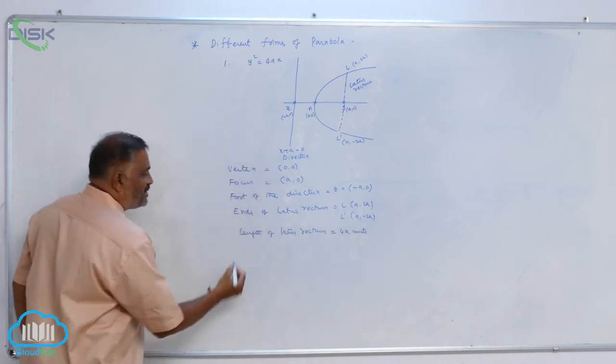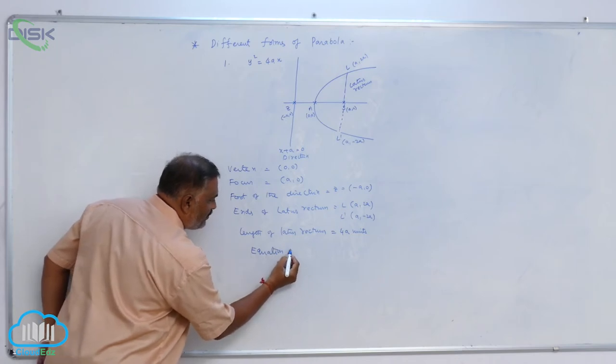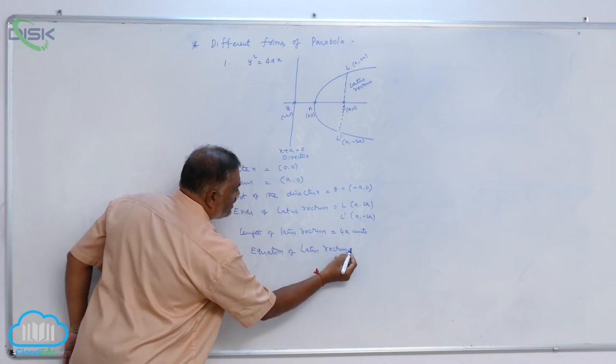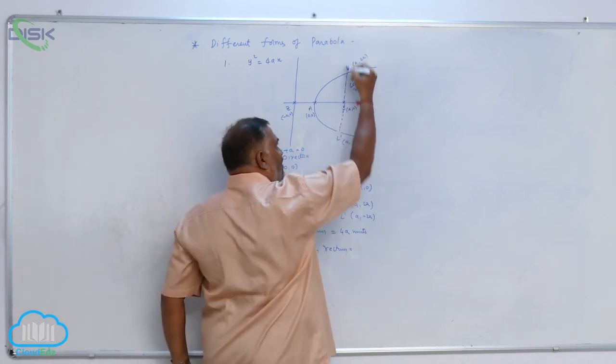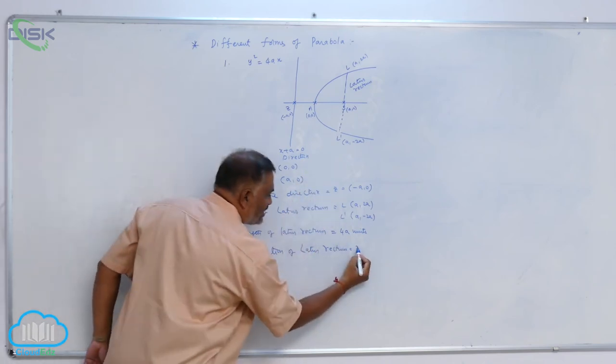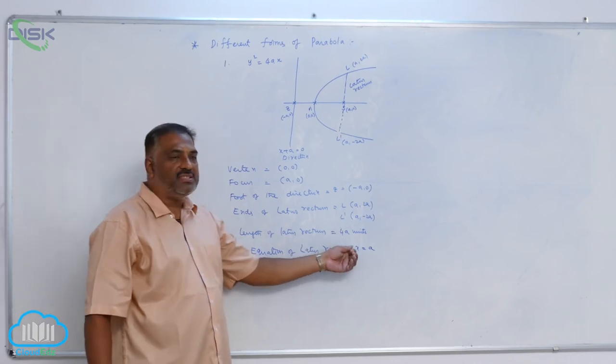Then comes equation of Latus Rectum. Equation of Latus Rectum is equal to—since it is a vertical line parallel to y-axis—it is x is equal to a. Equation of Latus Rectum is x is equal to a.